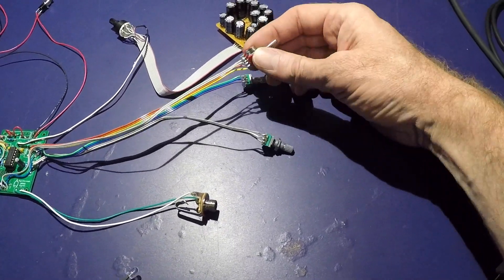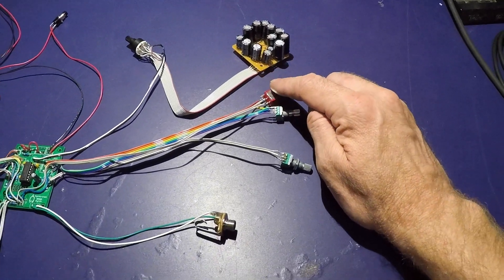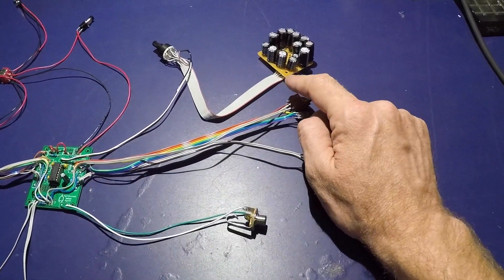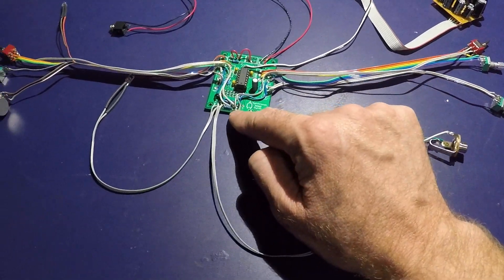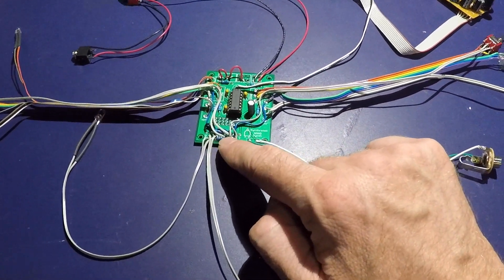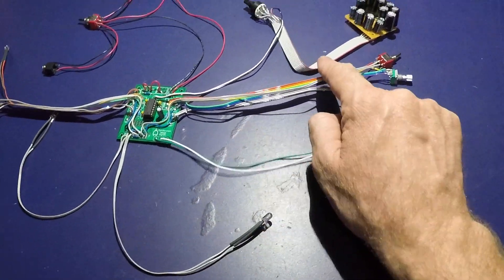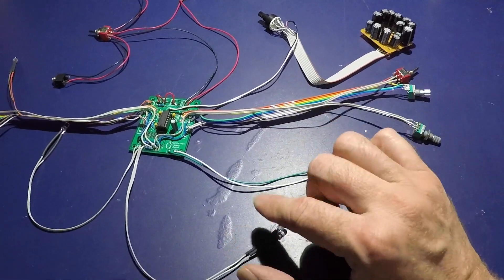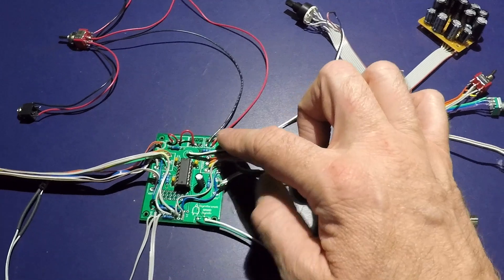On each of them, the toggles are a double pole, double throw toggle. Half of it is wired to the board to control the pitch. And the other half is wired over to this little circuit with just a couple little resistors I added to control LED indicators for each oscillator. They just flash at the rate of the oscillator.